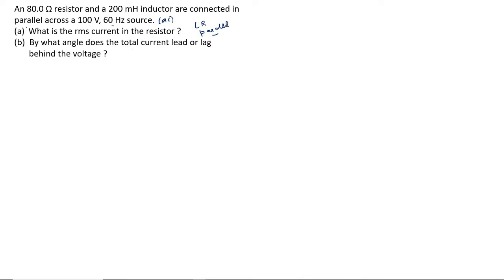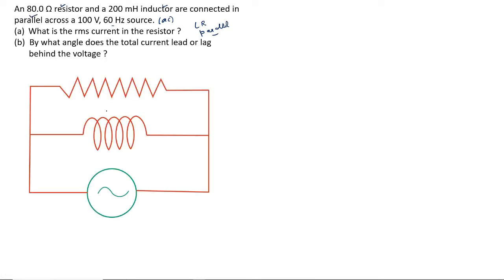This is an AC circuit having a resistor and inductor connected in parallel. Let us draw the diagram. This is resistor, this is inductor, this is AC source. We will mark the values given in the question. This 200 mH, you can even simplify and write as 0.2 Henry. Of course, this will be RMS value of the source.